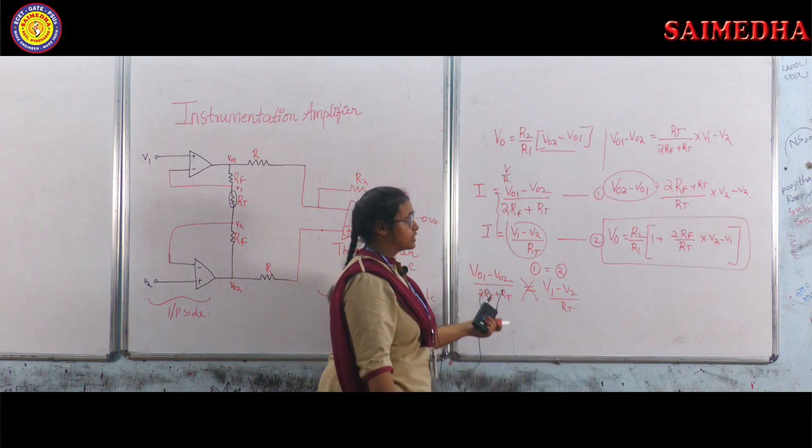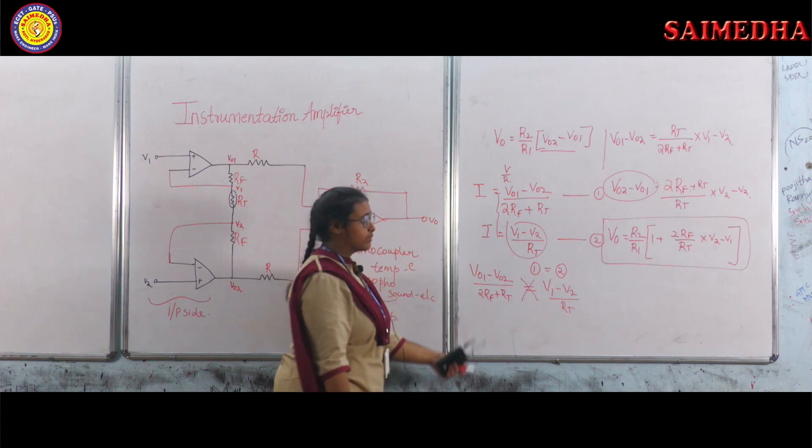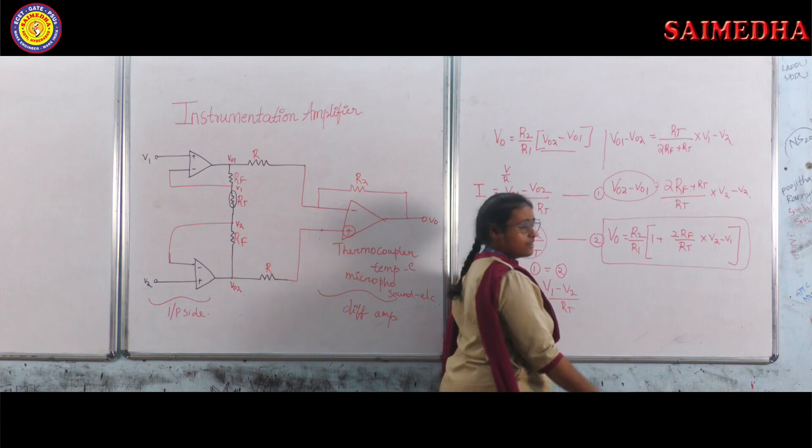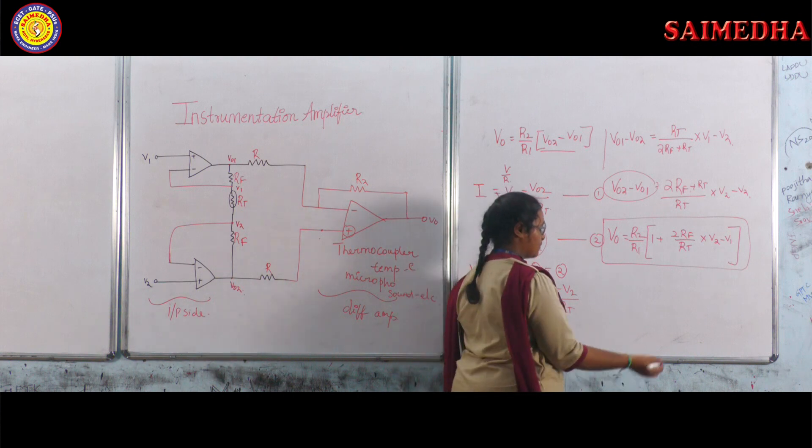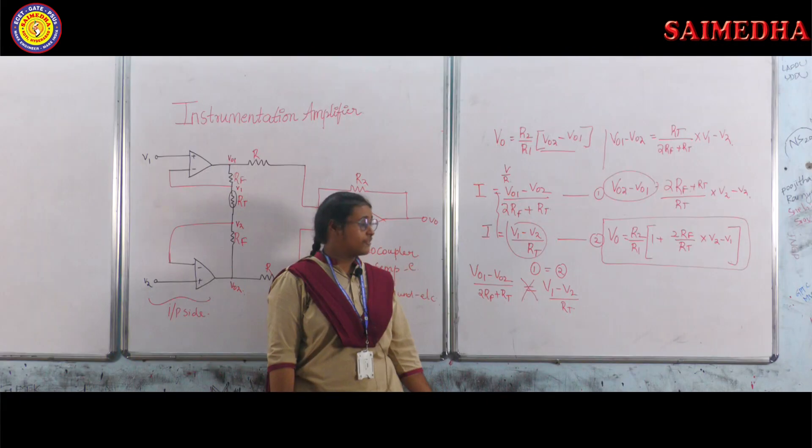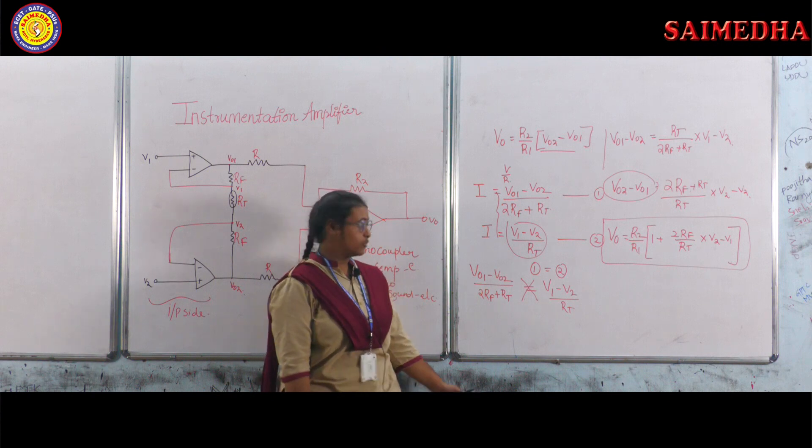We are using this instrumentation amplifier to amplify the signals which we get from the sensor which are very small in measure, that is few microvolts. The main applications of this instrumentation amplifier is we will be using them in sound buzzers, fire alarms, home automation and many more.